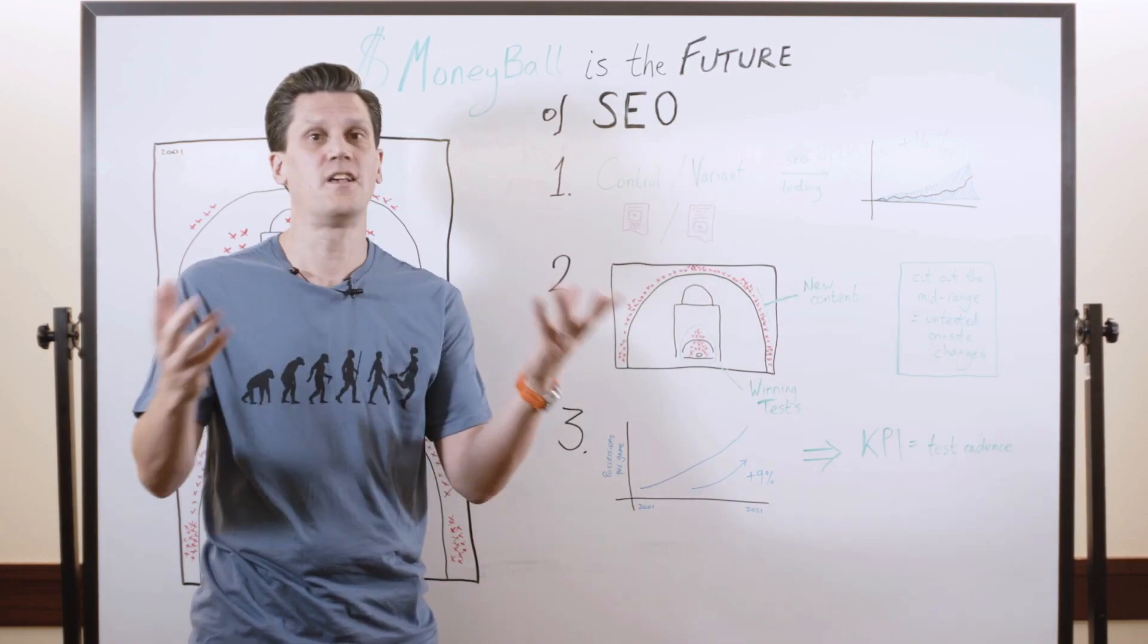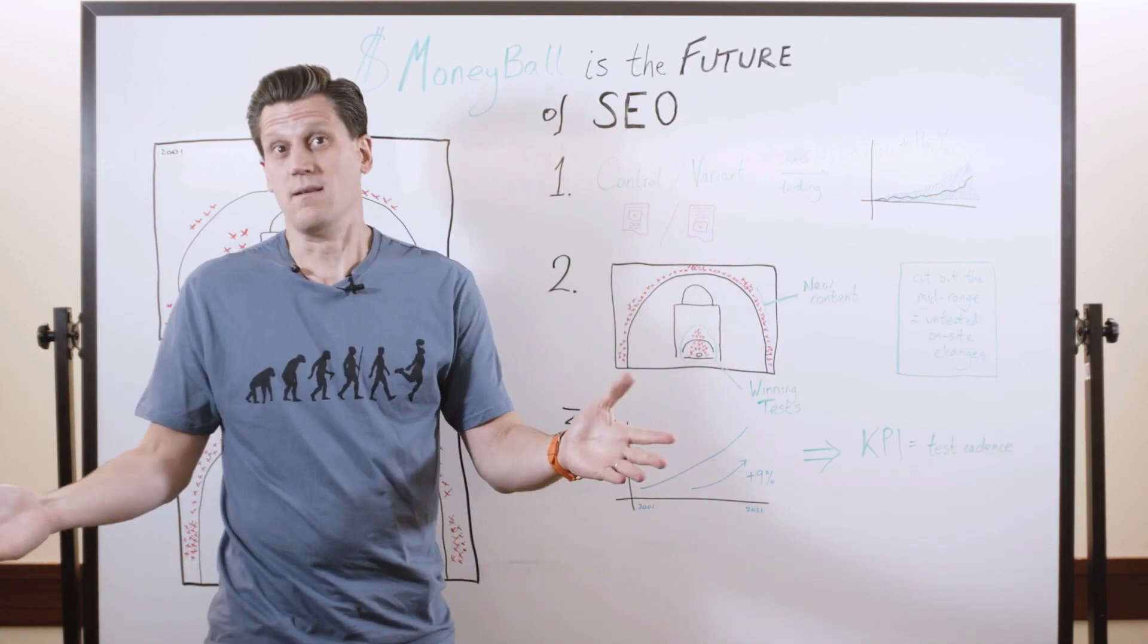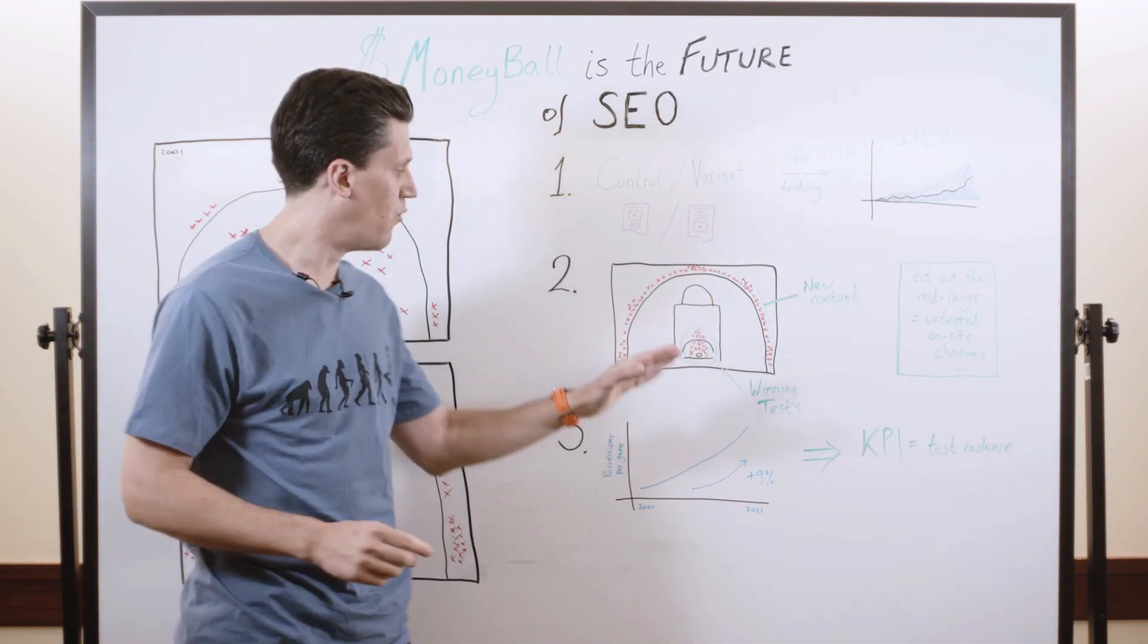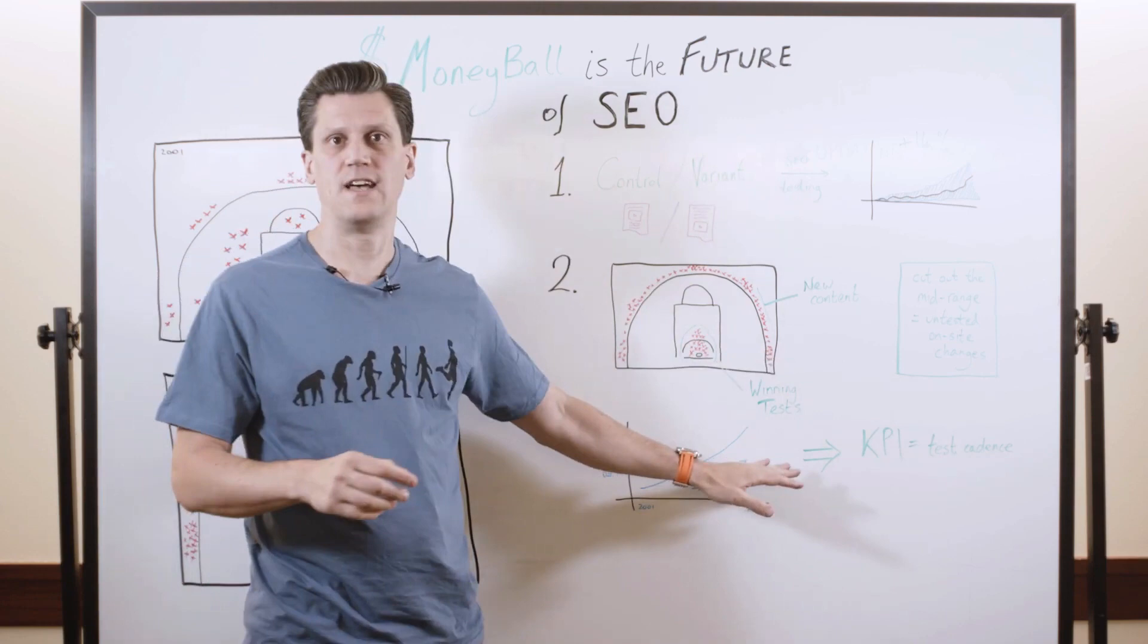And that's just like, you walk into a casino and you play roulette once, maybe you win. You play roulette a thousand times, the casino is definitely winning. And that's because they have the edge. So if we have the edge, because we're running these tests, we want to drive the number of tests up and test cadence.